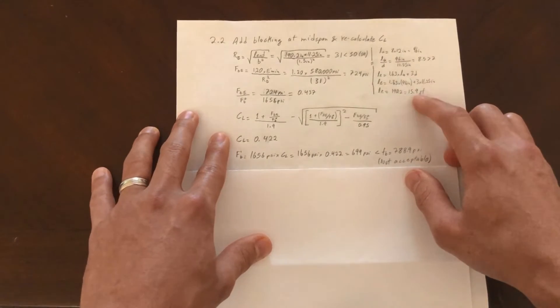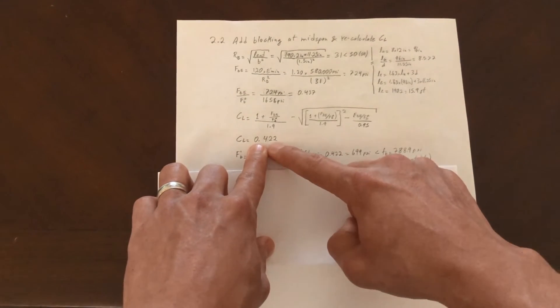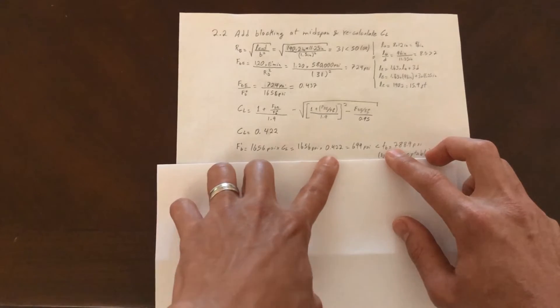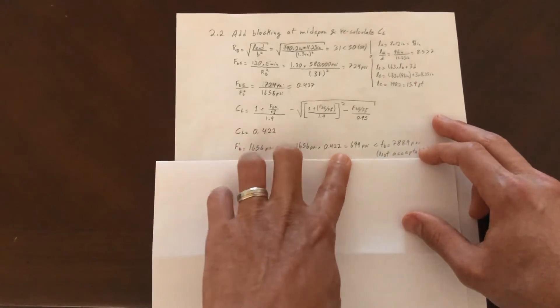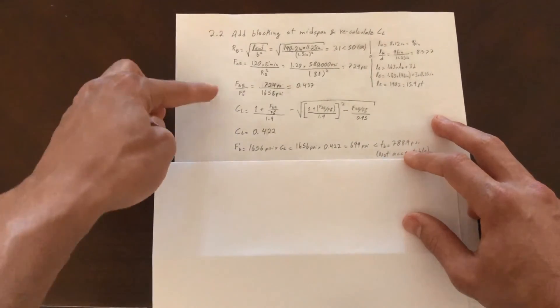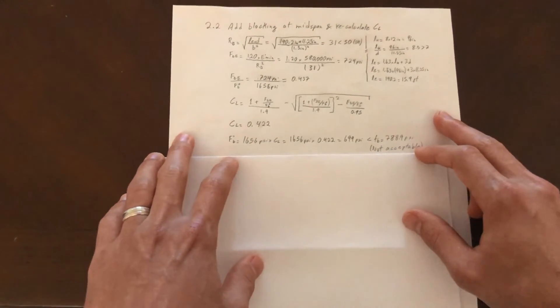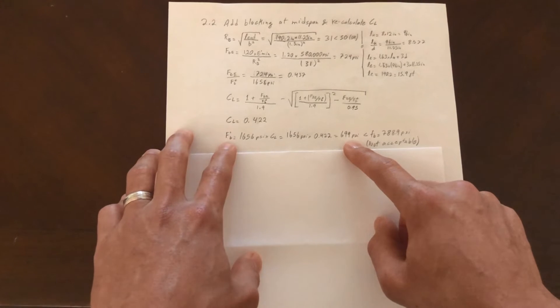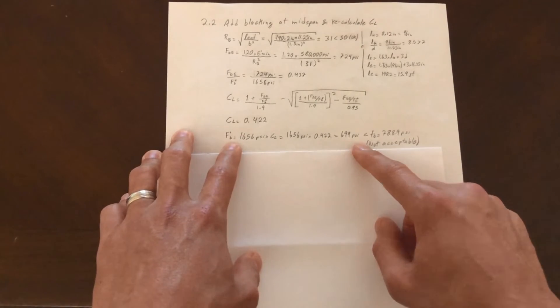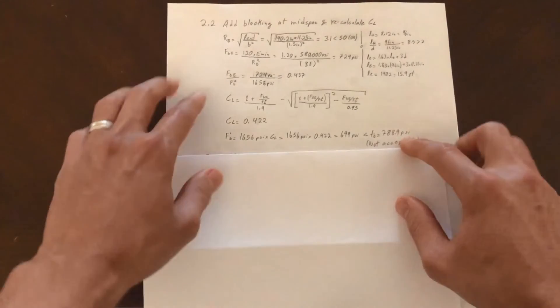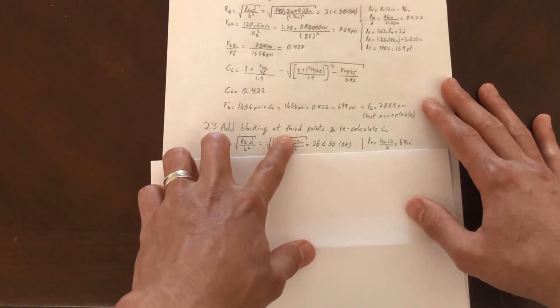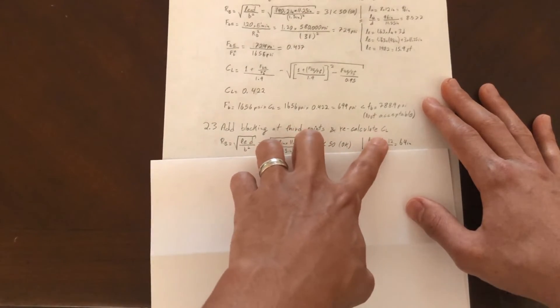It's a lot less - it's almost half of what we got before. Then our C sub L almost doubles. It is 0.422, and this didn't get us there yet, which is unfortunate because then we're going to have to redo this or do another iteration to see if this is going to work. We're pretty close - 69.9 psi for F sub B prime - but we're still under 788.9. So let's do it again. Now we're going to add blocking at third points and then recalculate C sub L.